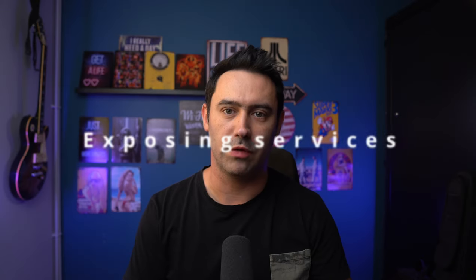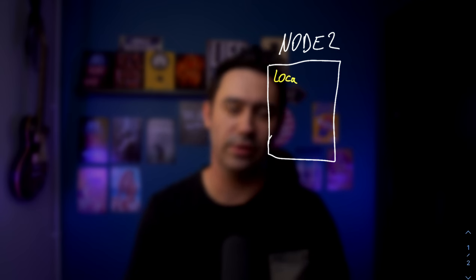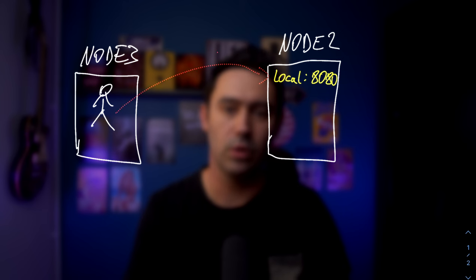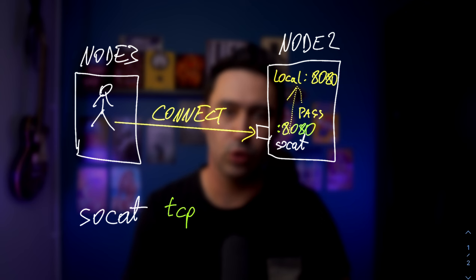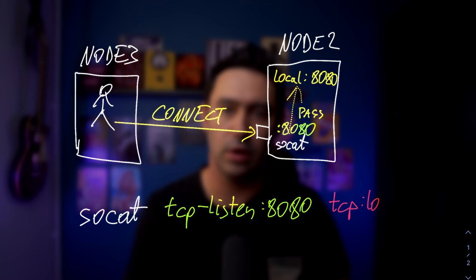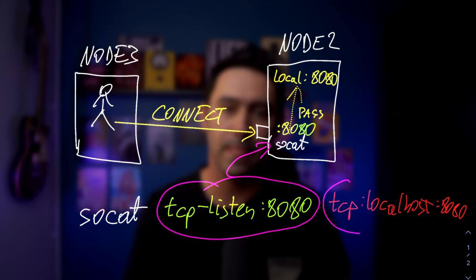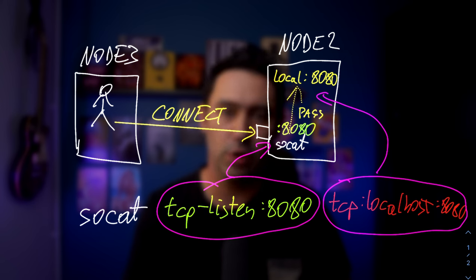Now that we know the basics, let's move to practical examples. Our first use case is exposing services. Let's imagine we have a node 2 server with an HTTP service running on localhost port 8080. We can run a SOCAT application on node 2 that listens on the public interface on port 8080 and passes the traffic to localhost. The command is: socat TCP-listen:8080 TCP:localhost:8080.